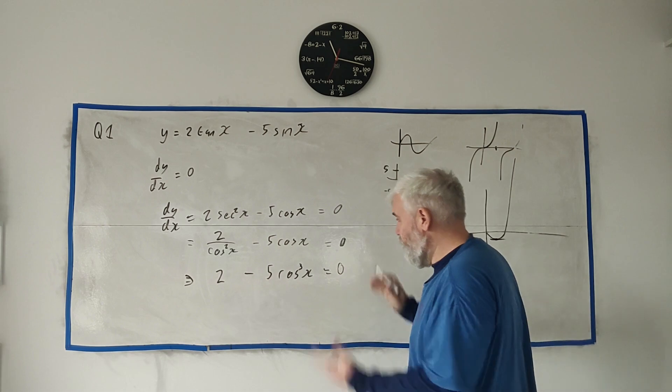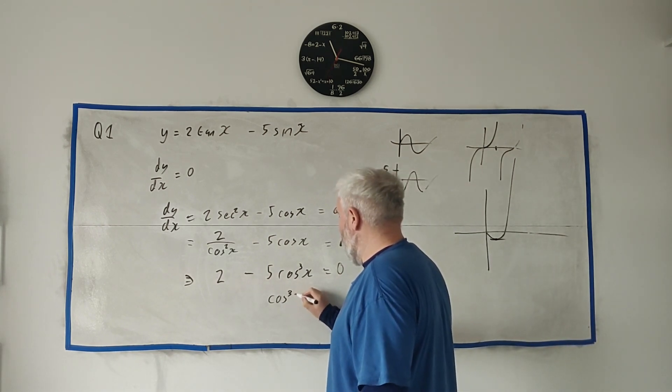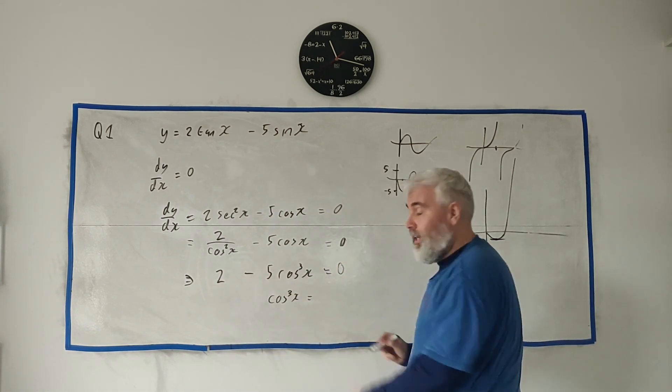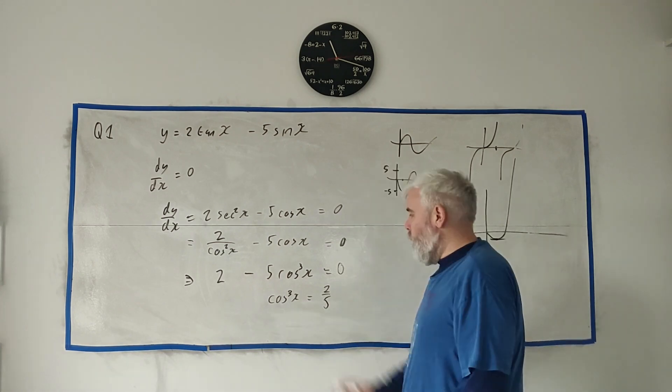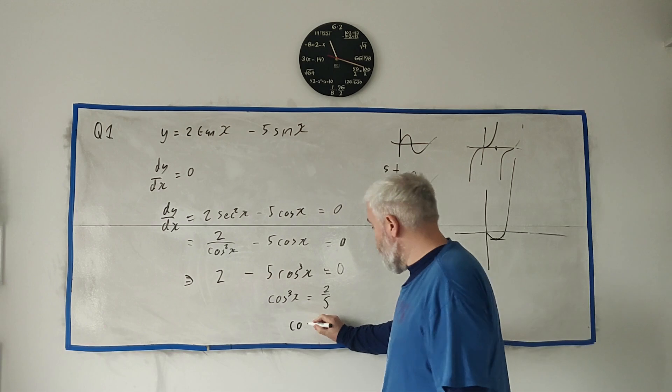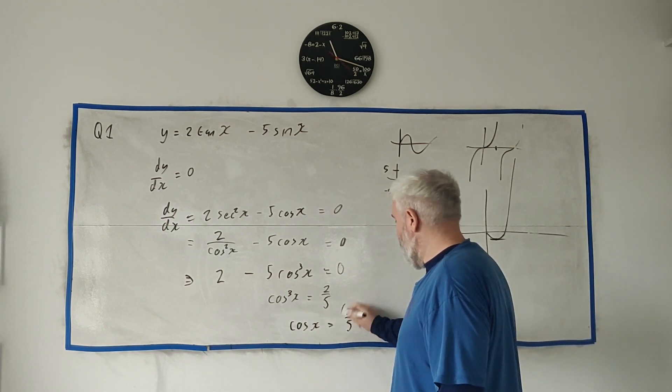And rearrange this so we get cosine cubed x is equal to—minus 2 divided by minus 5, or 2/5. Move the cube over by just getting to the power of 1/3 to both sides, and so that's equal to 2/5 to the power of 1/3.